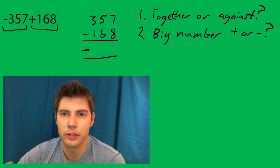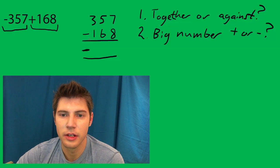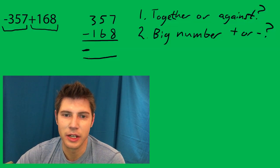So once again, together or against. Since these were against, they get subtracted, and then since the bigger number is negative, the answer is going to be negative.